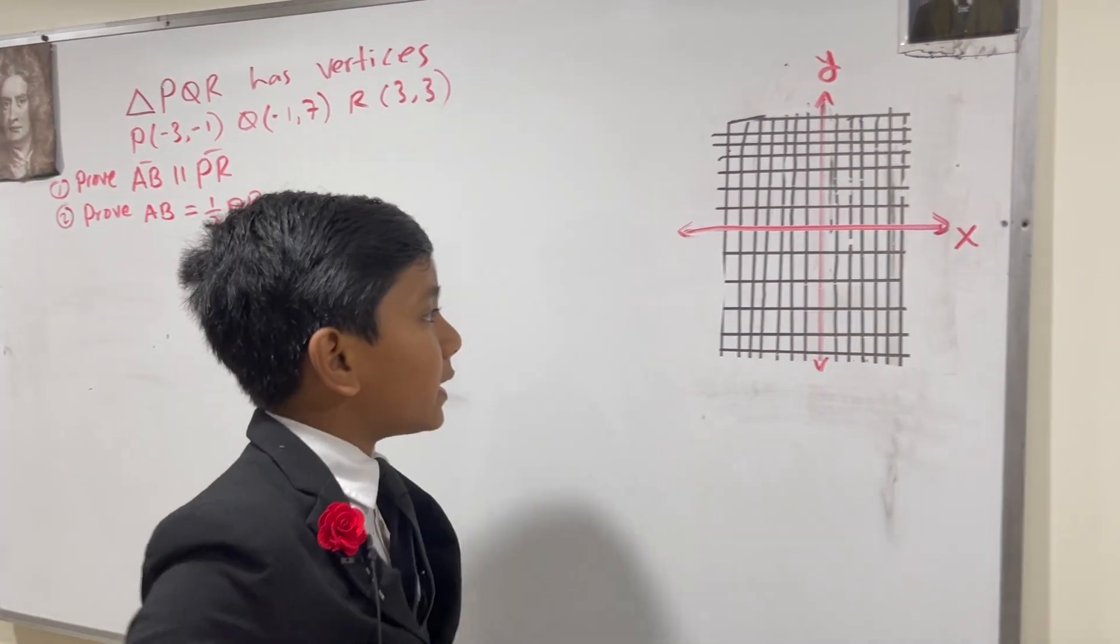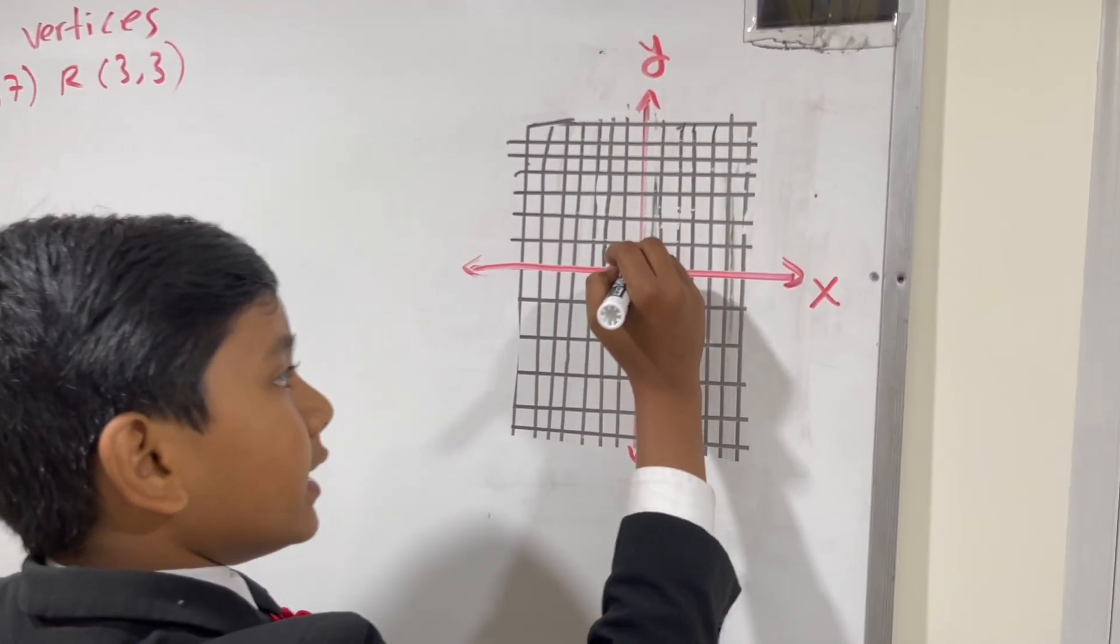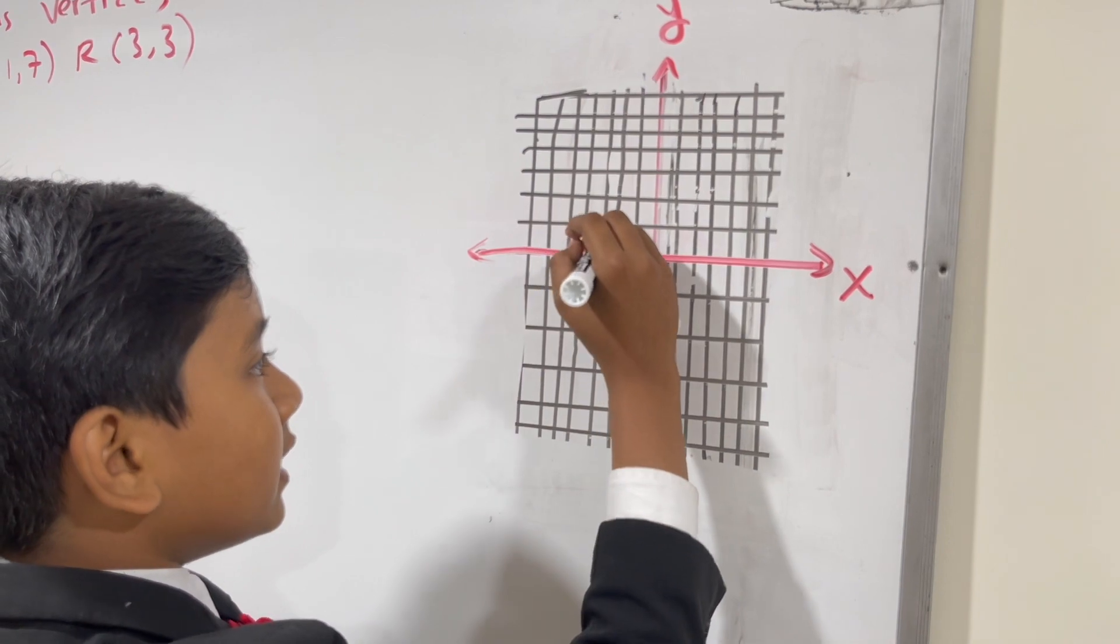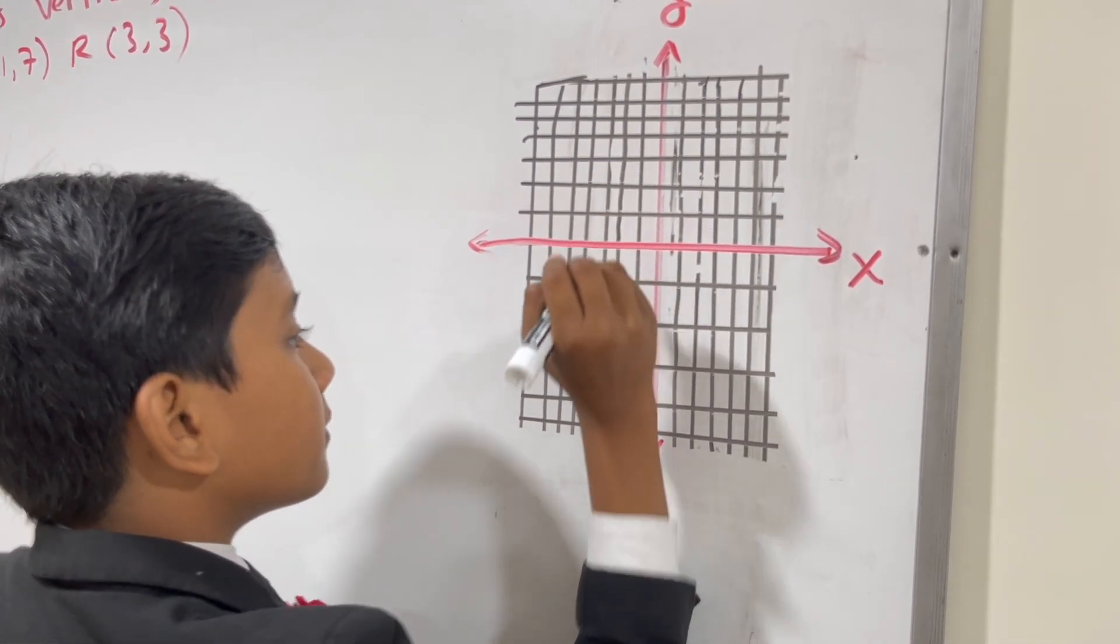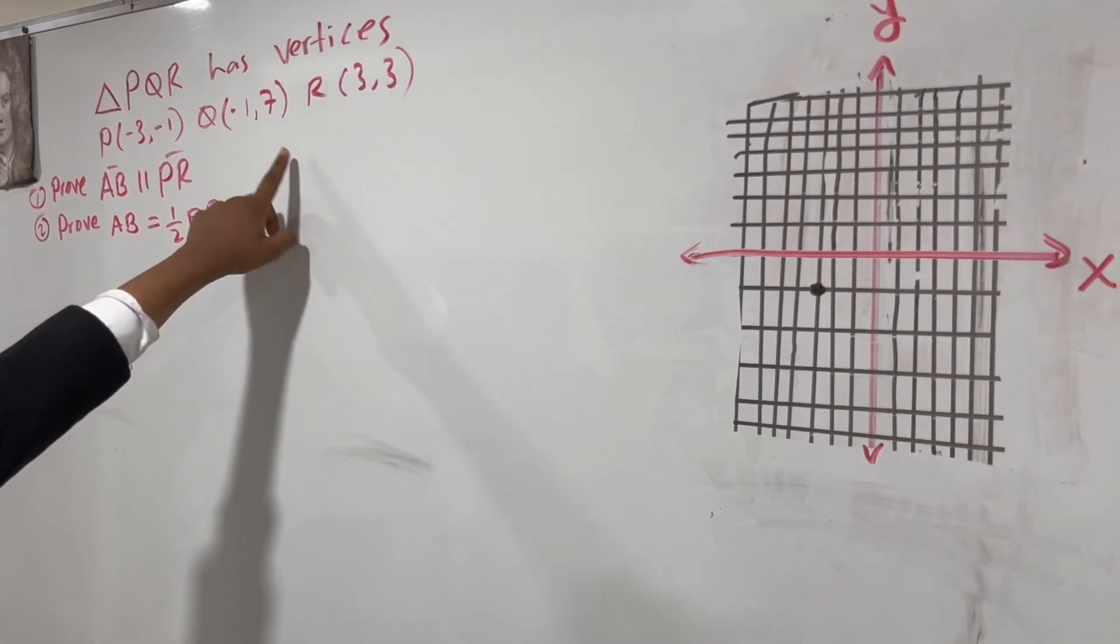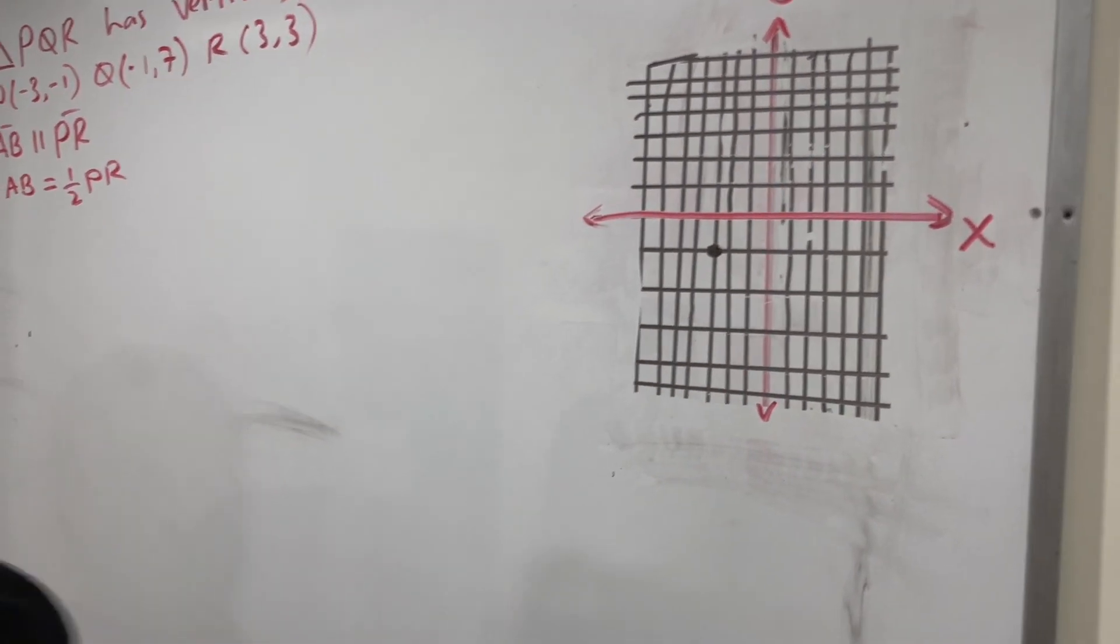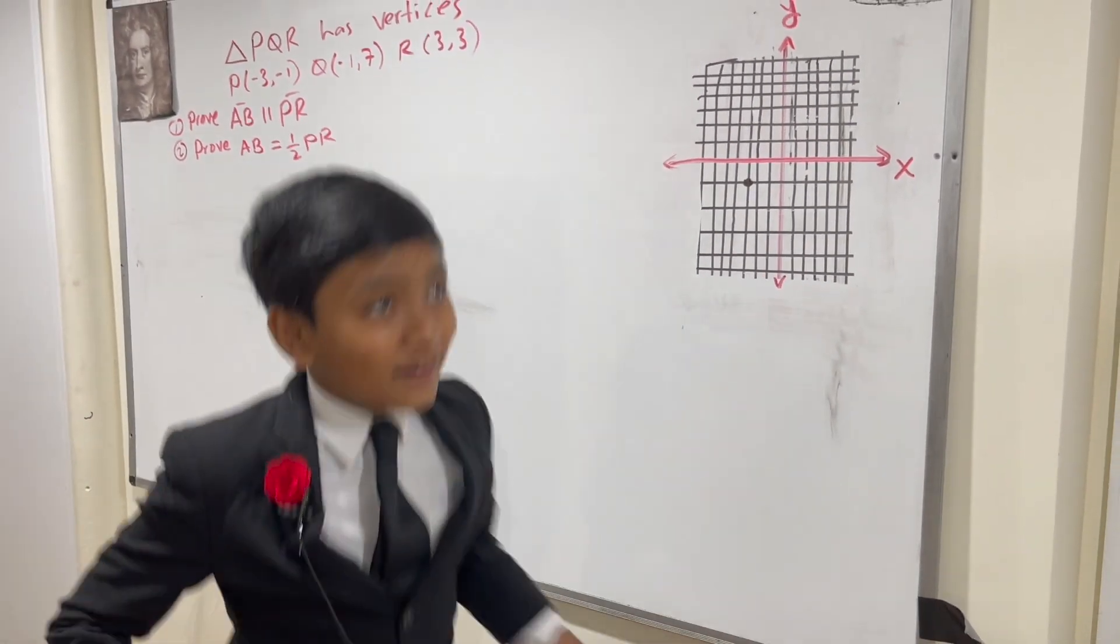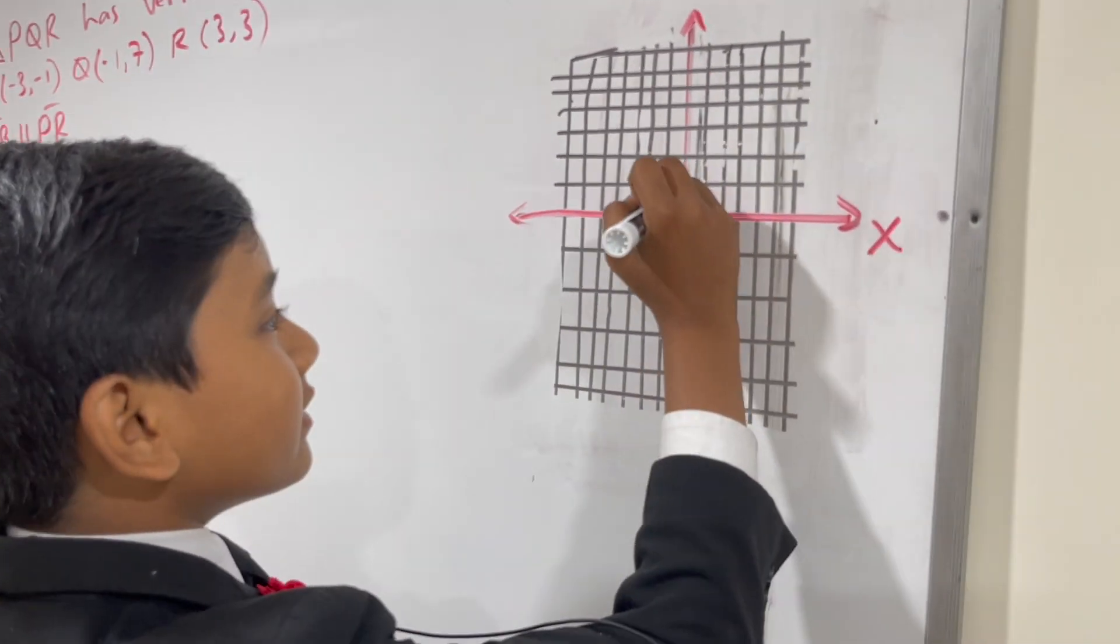P is at negative 3, negative 1. Q is at negative 1, comma 7. What a bombastic number!